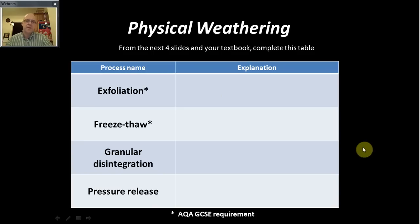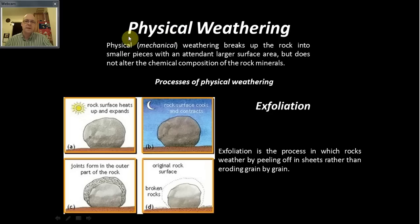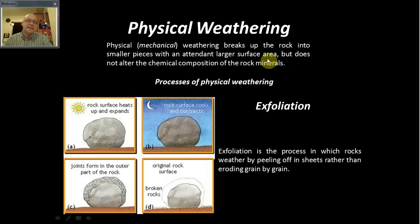You can tabulate your notes for revision. The key physical weathering processes are exfoliation and freeze-thaw, which I'll focus on, plus two others I'll cover more briefly. With physical or mechanical weathering, rocks are broken up into fragments of exactly the same rock minerals, but we do get a larger surface area, which can accelerate the relative rates of chemical weathering. We'll look at Louis Peltier's diagram shortly.